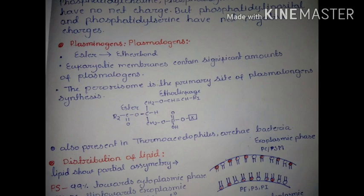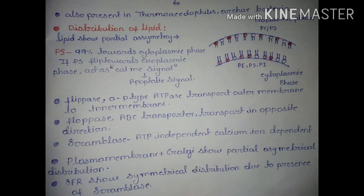Although the function of plasmalogen has not yet been fully elucidated, it has been demonstrated that it can protect mammalian cells against the damaging effects of reactive oxygen species. Now we discuss the distribution of lipids, which shows partial asymmetry — phospholipids and sphingolipids are not present uniformly across both leaflets of the plasma membrane.